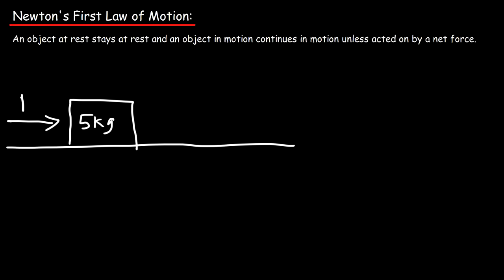If you apply a force strong enough, the block will begin to slide across the surface. To cause an object to move requires an action — a force is basically a push or a pull. You can push the box to the right or pull it with a rope. Either way, a force is required to accelerate the object.